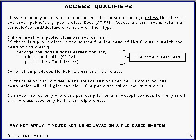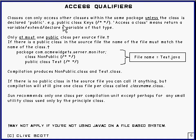Classes can only access other classes or interfaces within the same package, unless the class it's trying to access is declared as public. You declare it as public by putting public in front of the class definition. By 'access a class', what it means is to declare a variable of that class type, extend that class, or return a variable of that class type.